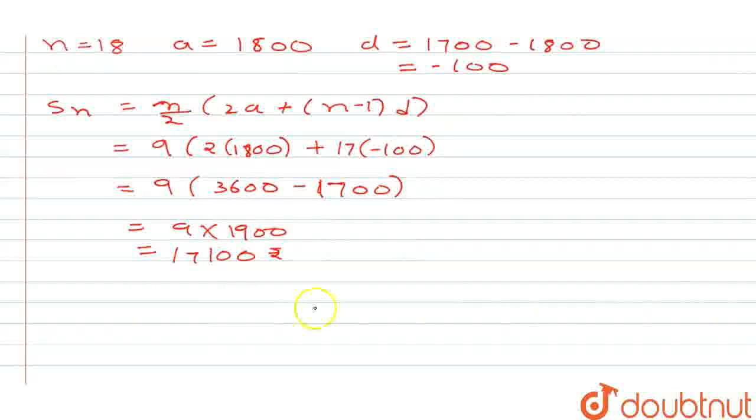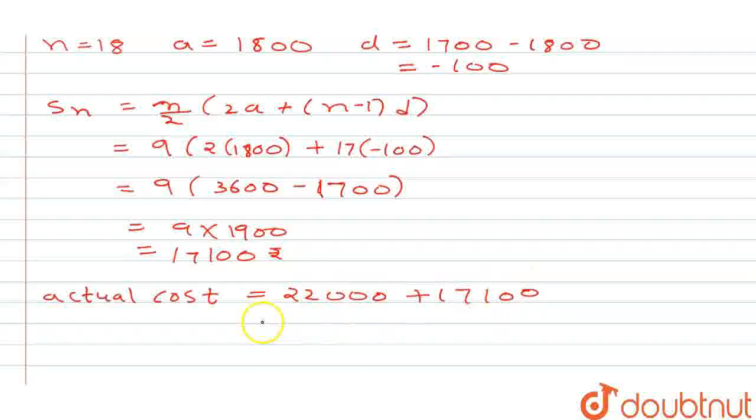So the actual cost he has to pay is 22,000 plus 17,100 extra. So the total amount is 39,100 rupees. I hope you understand the solution. Thank you.